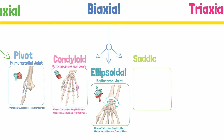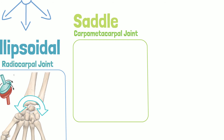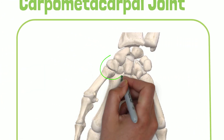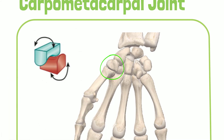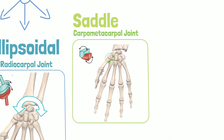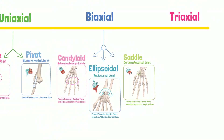An example of a saddle joint is the carpometacarpal joint of the thumb. It is a union of two saddle-shaped bones, both of which are concave and convex, oriented perpendicular to one another. The motions occurring are flexion-extension in the frontal plane and abduction-adduction in the sagittal plane.